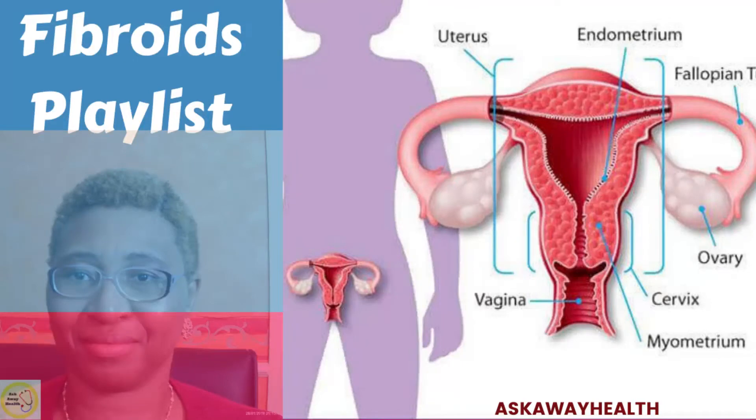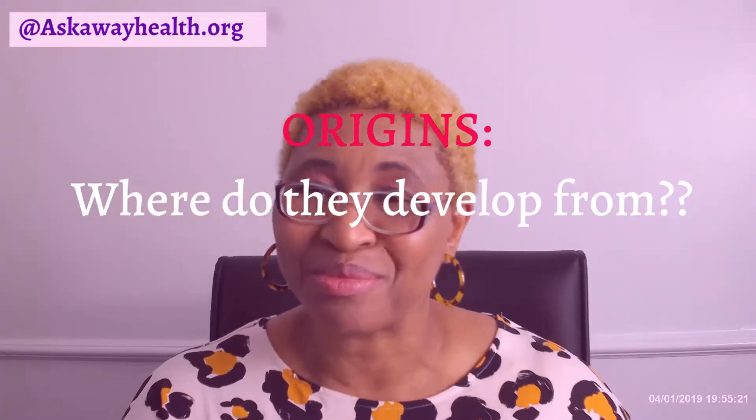We have a fibroid playlist series — if you want to learn all about fibroids, what they are, and how they are treated, please check the link in the description below. As a quick reminder: fibroids are benign growths of the womb in a woman and they occur quite frequently. Now let's start looking at comparisons. Number one: fibroids develop from the womb, and ovarian cysts develop from the ovary.